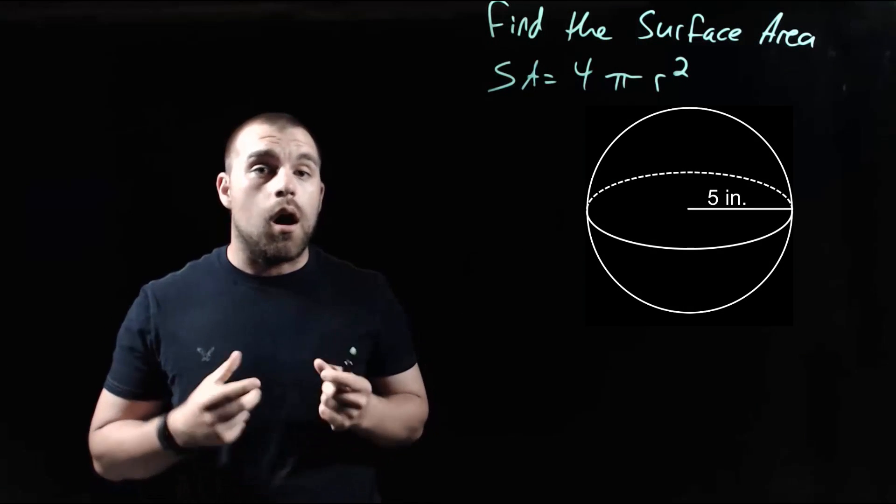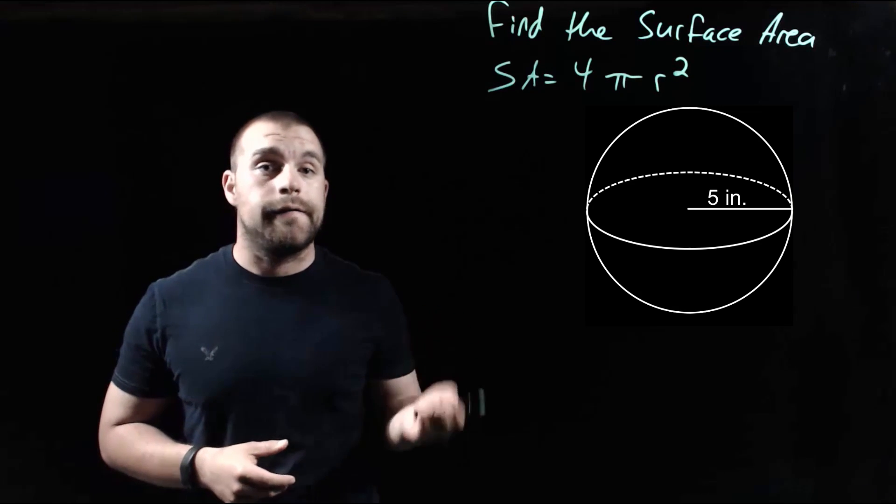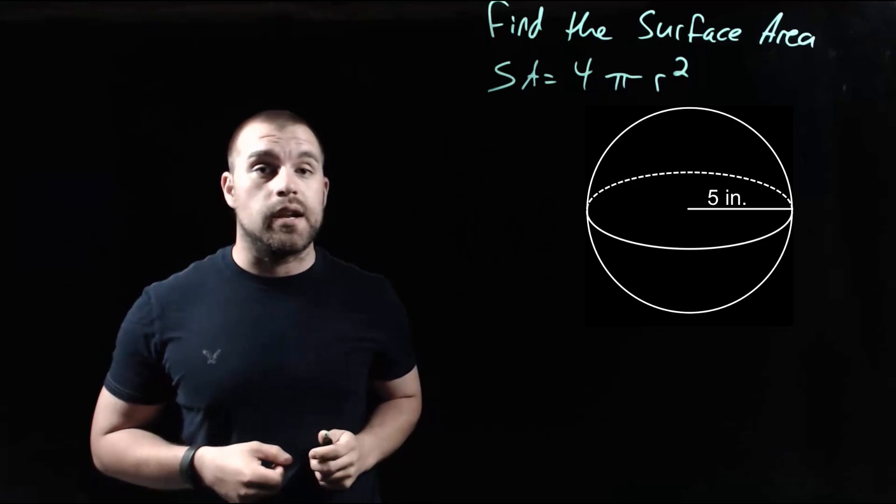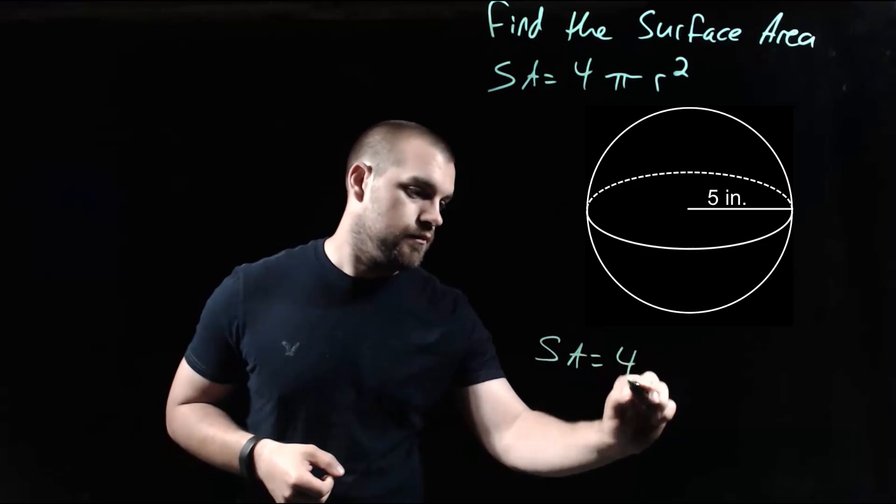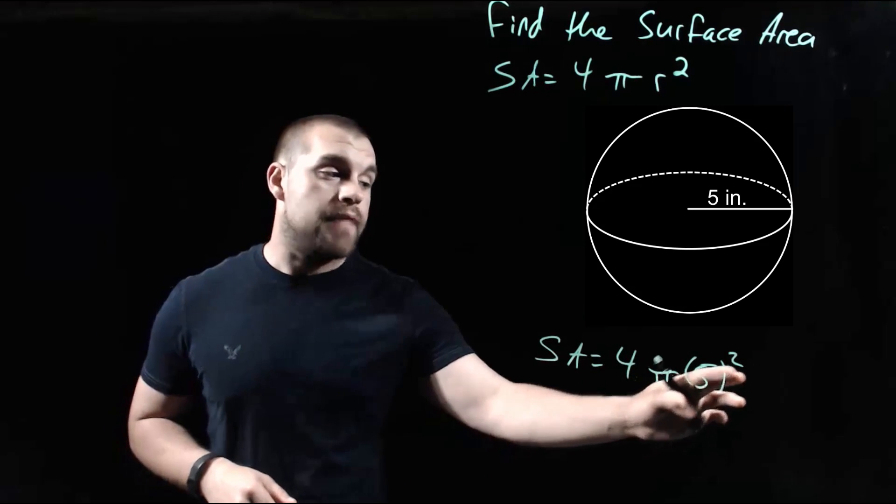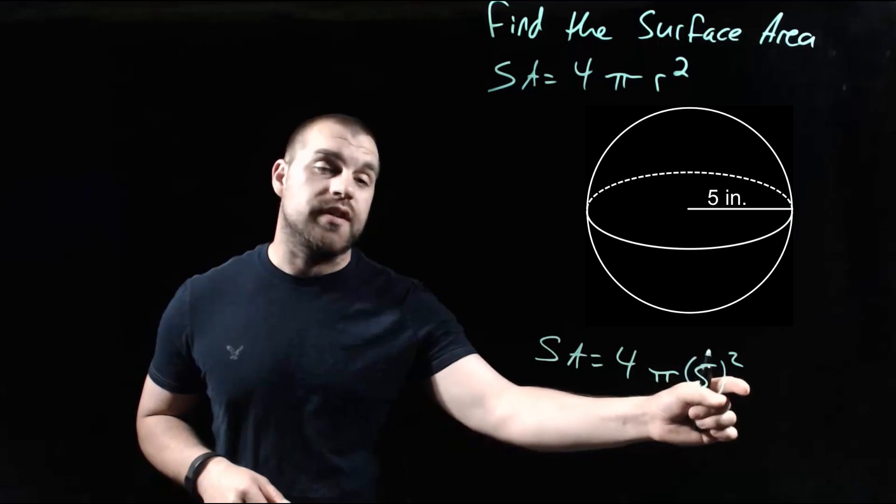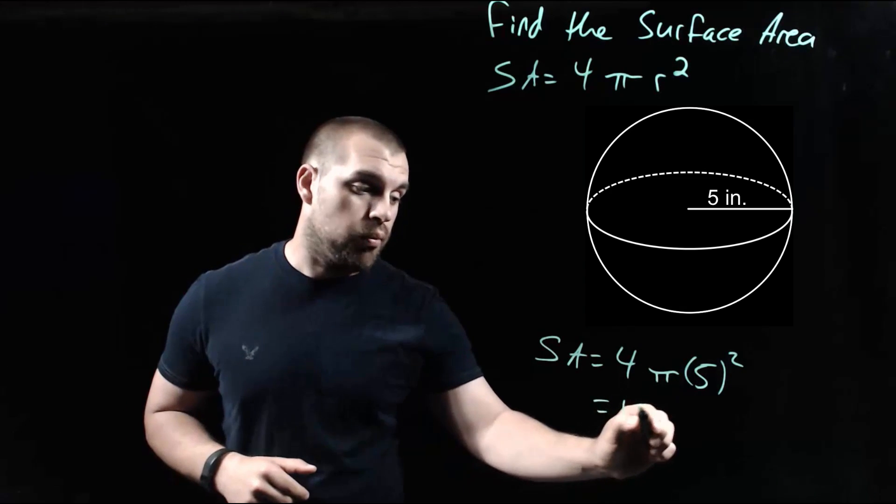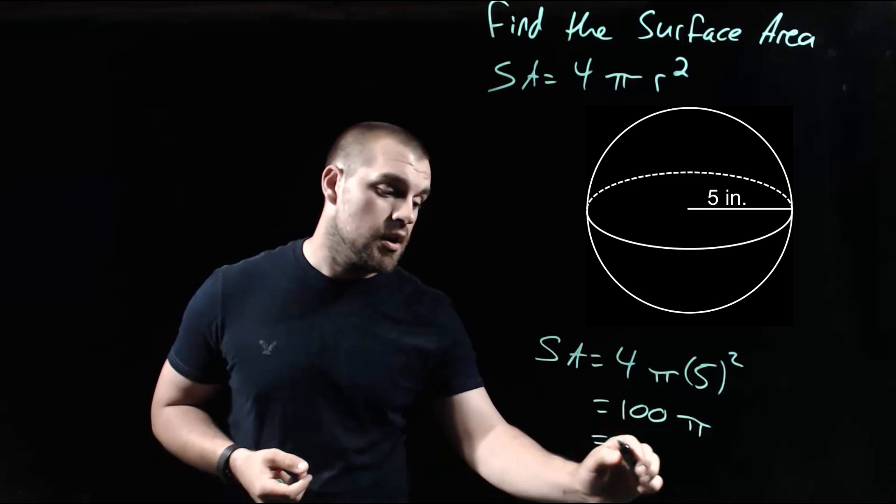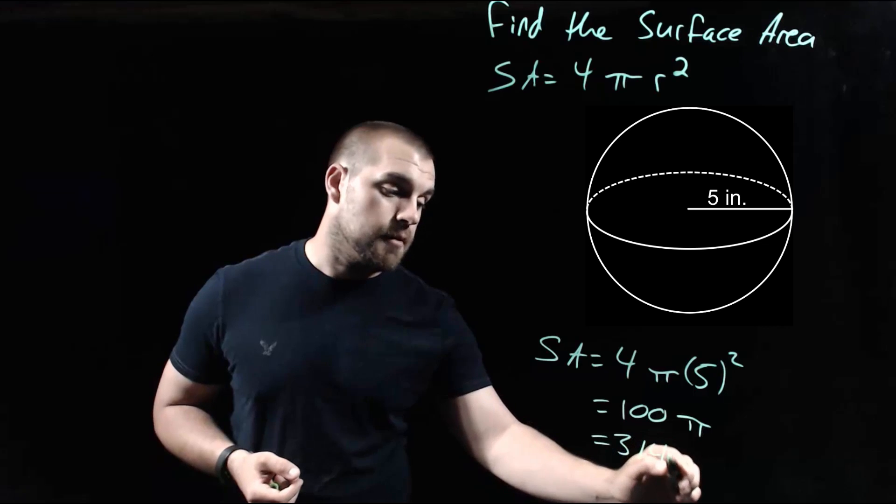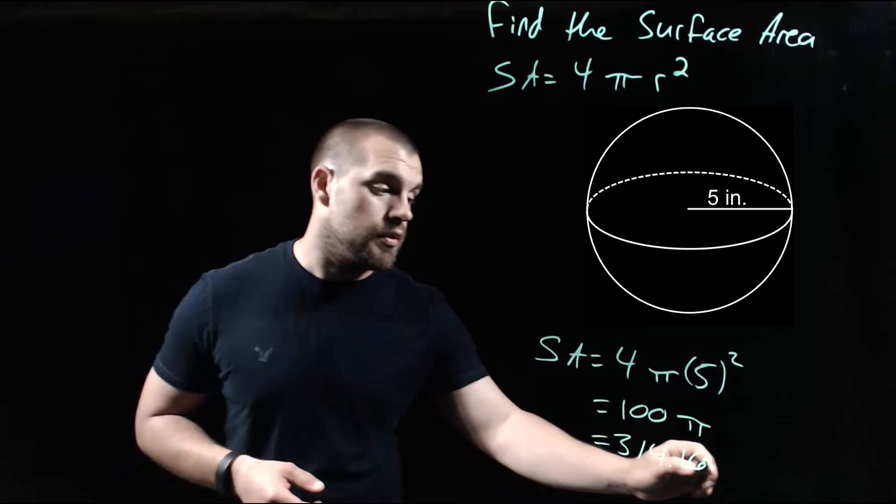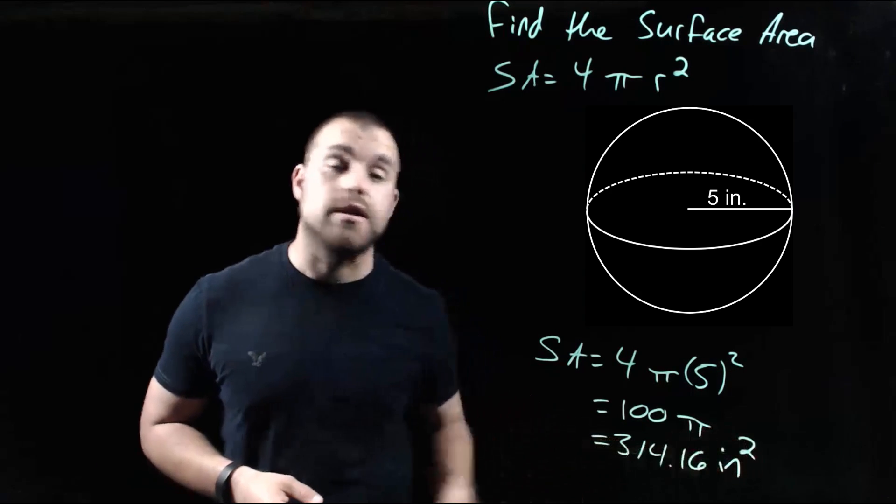As we take a look at this first example, our sphere has a radius of 5 inches. Our surface area formula says 4πr². If we plug that in, we've got 4 × π × 5². 5² is 25, and 4 × 25 gives us 100π. If we type that into our calculator, going to two decimal places, we get 314.16 inches squared.